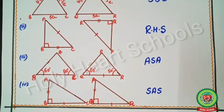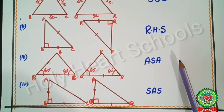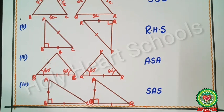So students, today we have learned about congruency and the different criteria for congruency. We also studied how to identify which test to apply to two given triangles to determine whether they are congruent. I hope all of you have understood this completely and are able to do the related homework sent in your Snap Homework. Thank you.